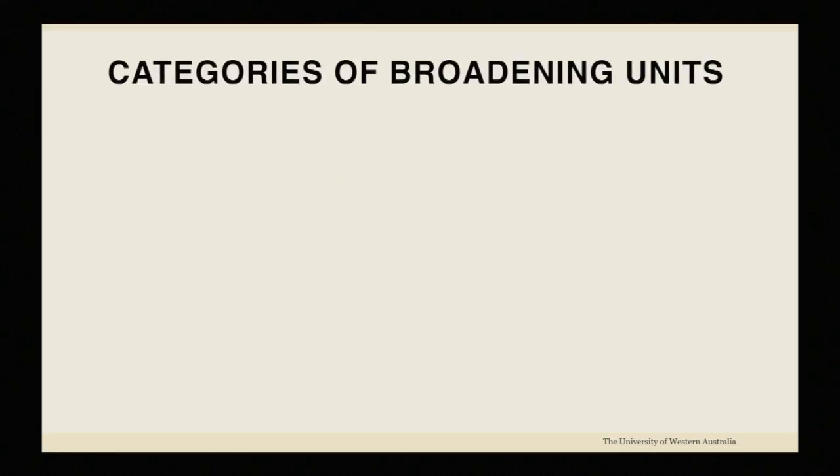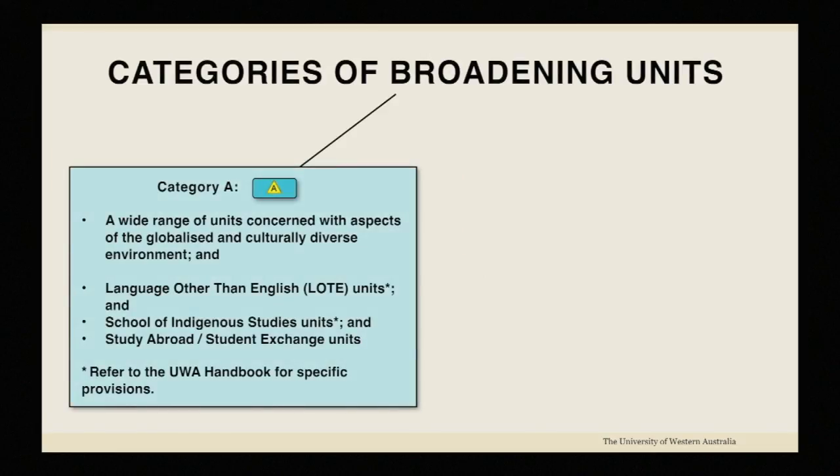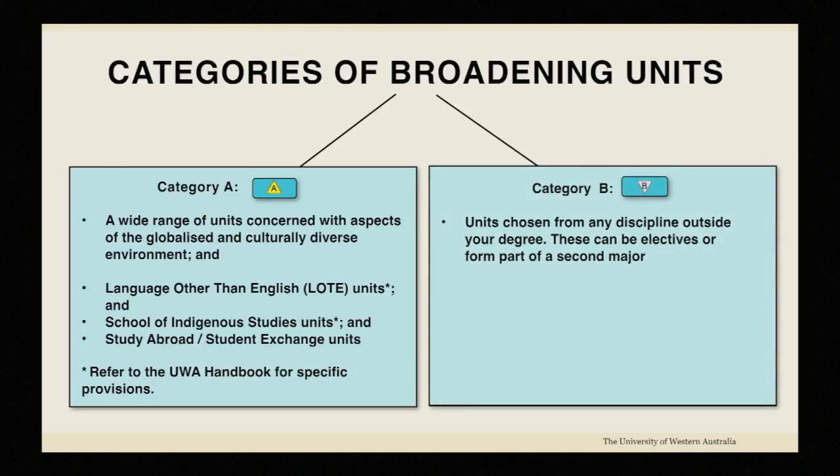There are two types of broadening units: those that belong to category A and those in category B. Category A units have a global spin and will prepare you for a culturally diverse environment. Category B units are chosen from outside your degree. These will expand your knowledge to include other fields.